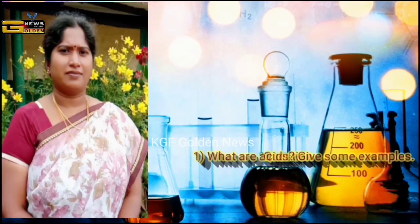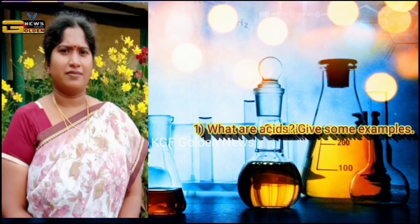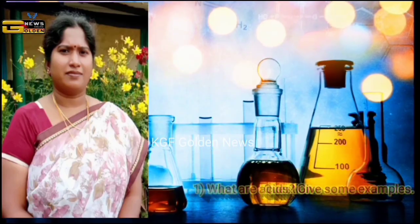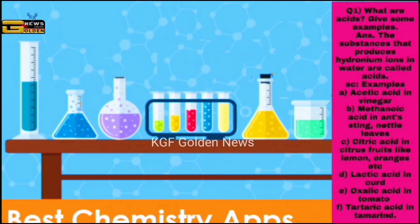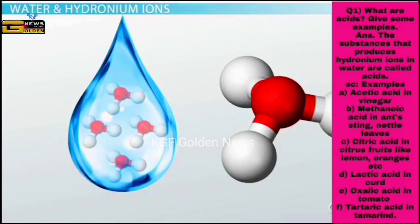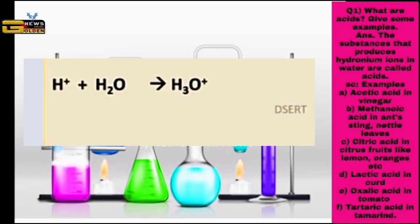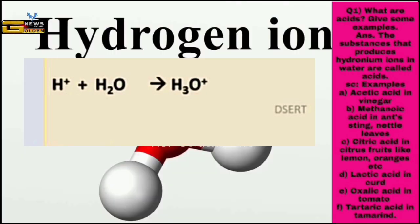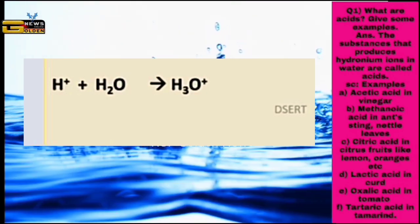Question number one: what are acids? Give some examples. The answer is, the substances that produce hydronium ions in water are called acids. Hydrogen ion combines with water to form hydronium ion.